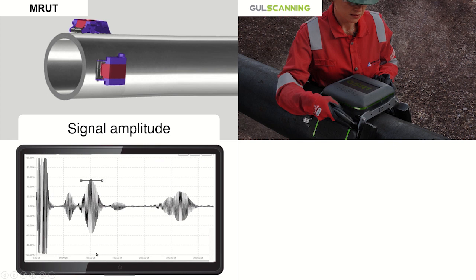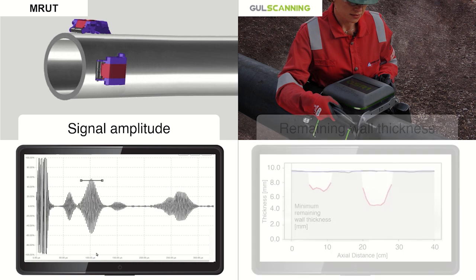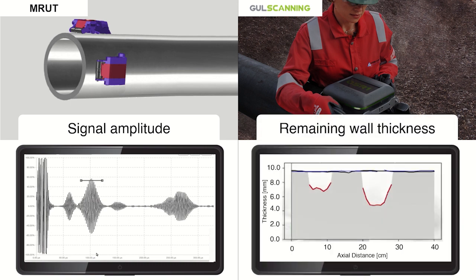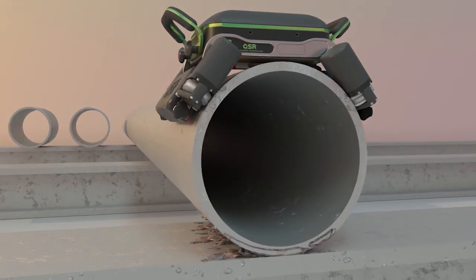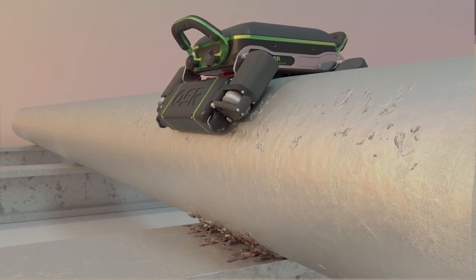GUL scanning has revolutionized pipeline support inspections by going beyond conventional amplitude measurements and giving inspectors the remaining pipe wall thickness at the support, which is the information that matters most for asset life prediction.